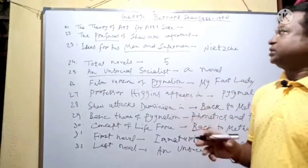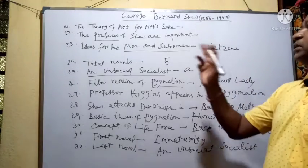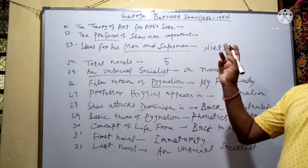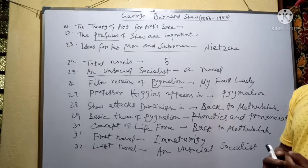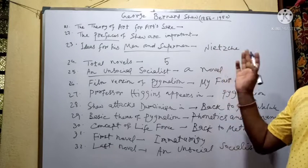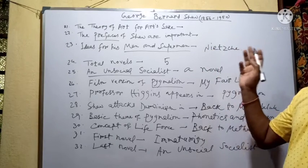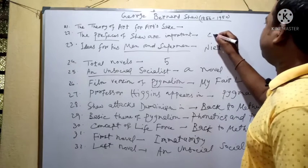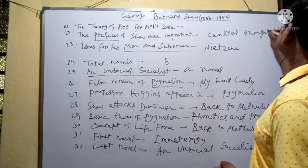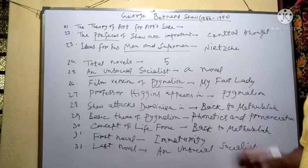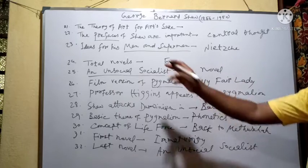Now, a quick recap of all the questions and answers: George Bernard Shaw, 1856–1950. Shaw opposes the theory of art for art's sake, saying 'For art's sake alone, I would not face the toil of writing a single sentence.' The prefaces of Shaw are important because they explain the central thought of the play concerned. Shaw drew his ideas for Man and Superman from the philosophical doctrine of Nietzsche. Total novels: five.